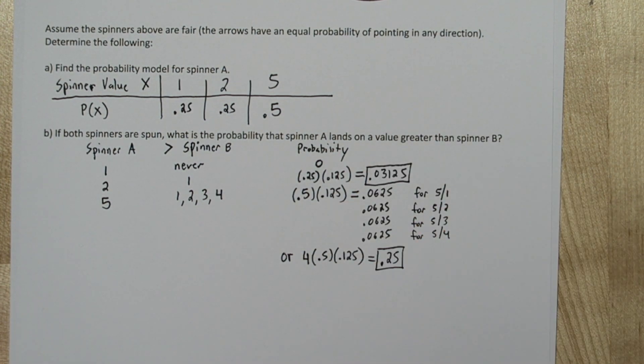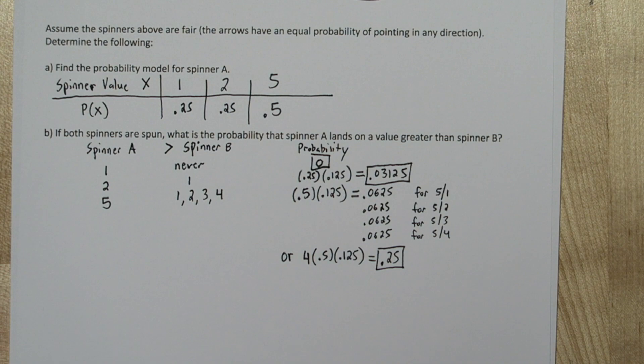So we're left with three probabilities. Our 0 probability is the probability spinner A lands on a 1 and is greater than spinner B. Our 0.03125 probability is the probability spinner A lands on a 2 and is greater than spinner B, which happens if spinner B lands on a 1.